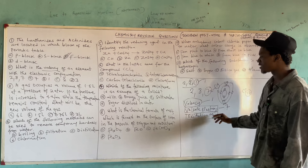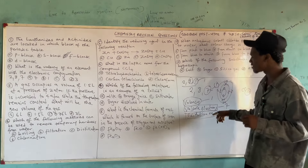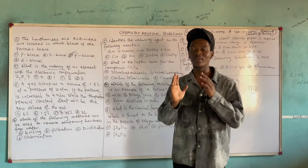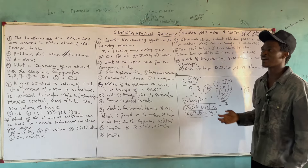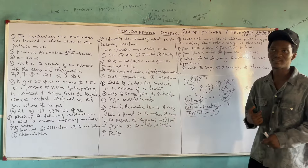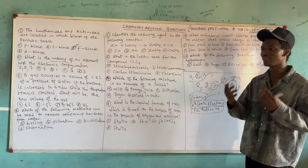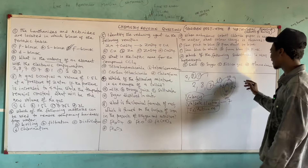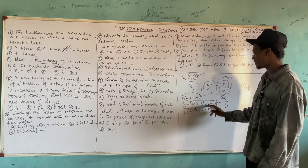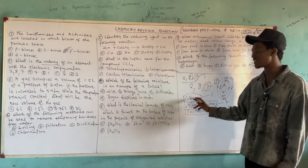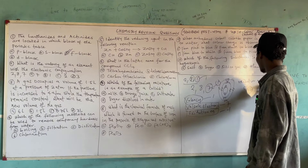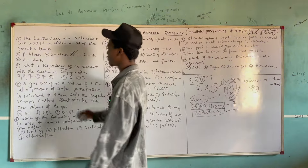To summarize: valence electrons = 7, valency = 1, and oxidation number = minus one (because gaining one electron means becoming negatively charged). Oxidation number equals valency plus charge. Since this element gains one electron, it becomes a negatively charged ion (electronegativity), giving an oxidation number of -1. So the correct answer to question 2 is 1, because we are asked for valency.